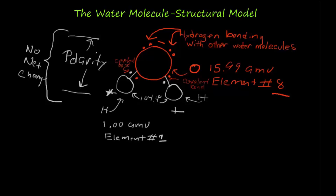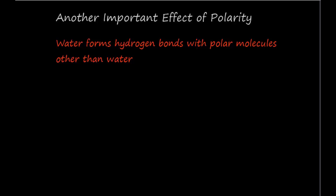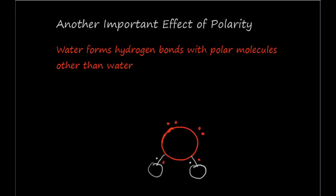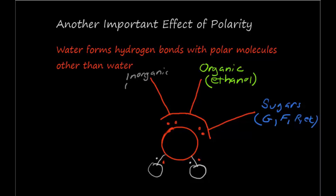Polarity is an important property of water. Water, because of its polarity, forms hydrogen bonds with polar molecules other than just water. These other molecules include sugars such as glucose, fructose, or ribose, organic molecules such as ethanol, and inorganic molecules such as ammonia.